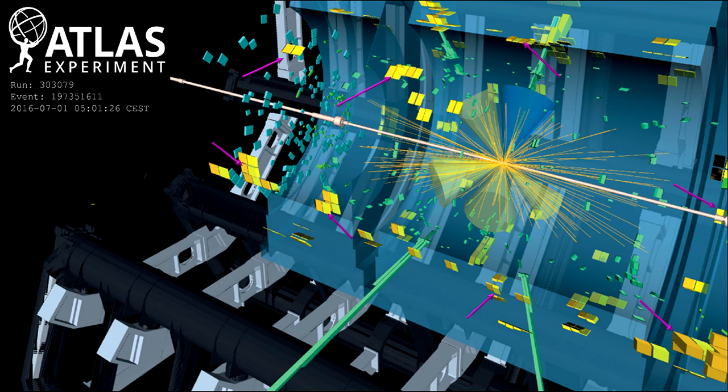The longer the box, the greater the energy deposited. The extremely long green boxes out of the bottom represent the energy deposited by the two photons created by the Higgs boson decay.